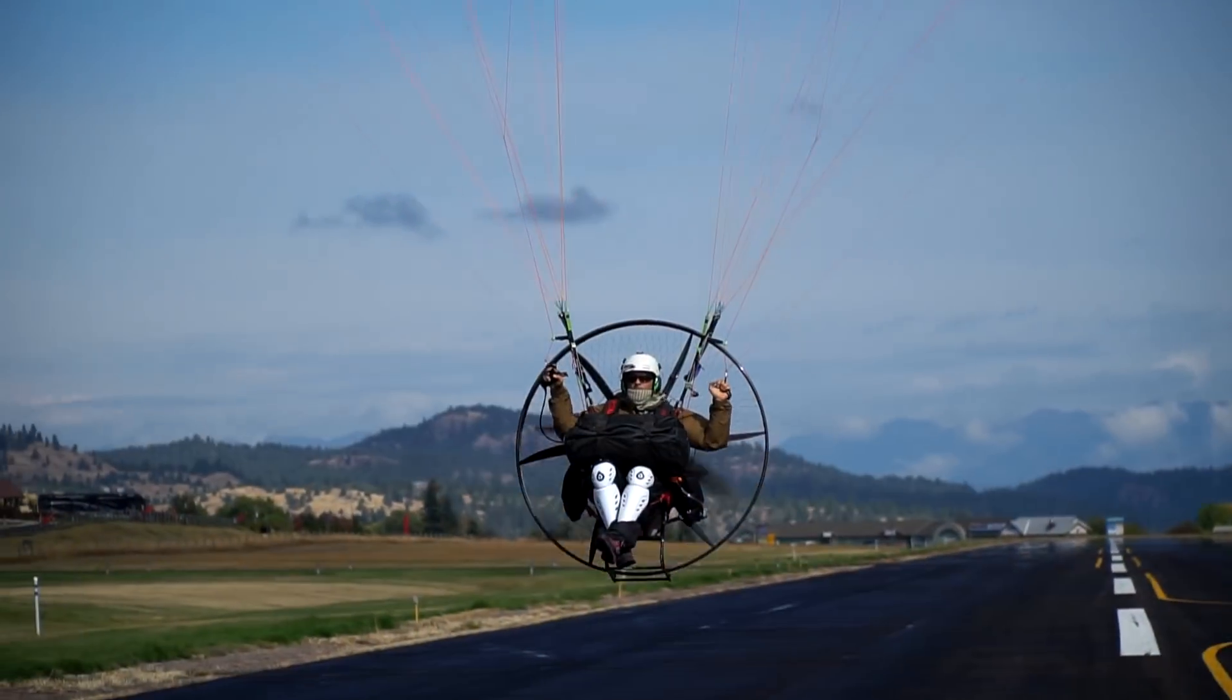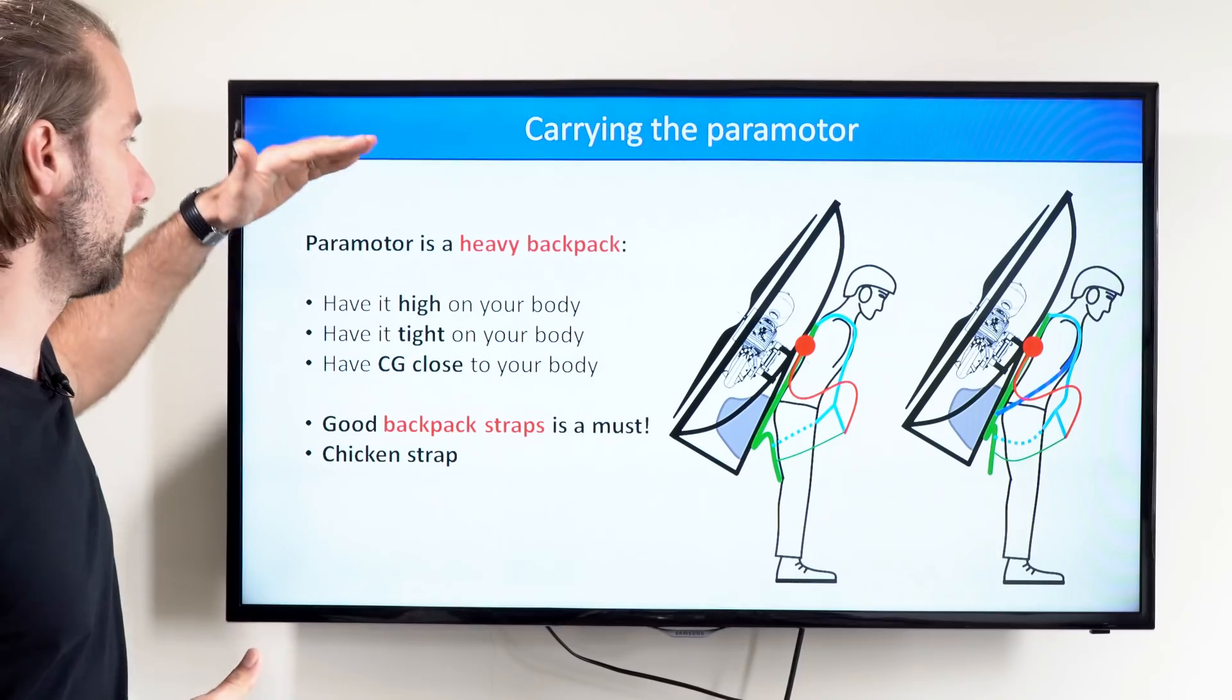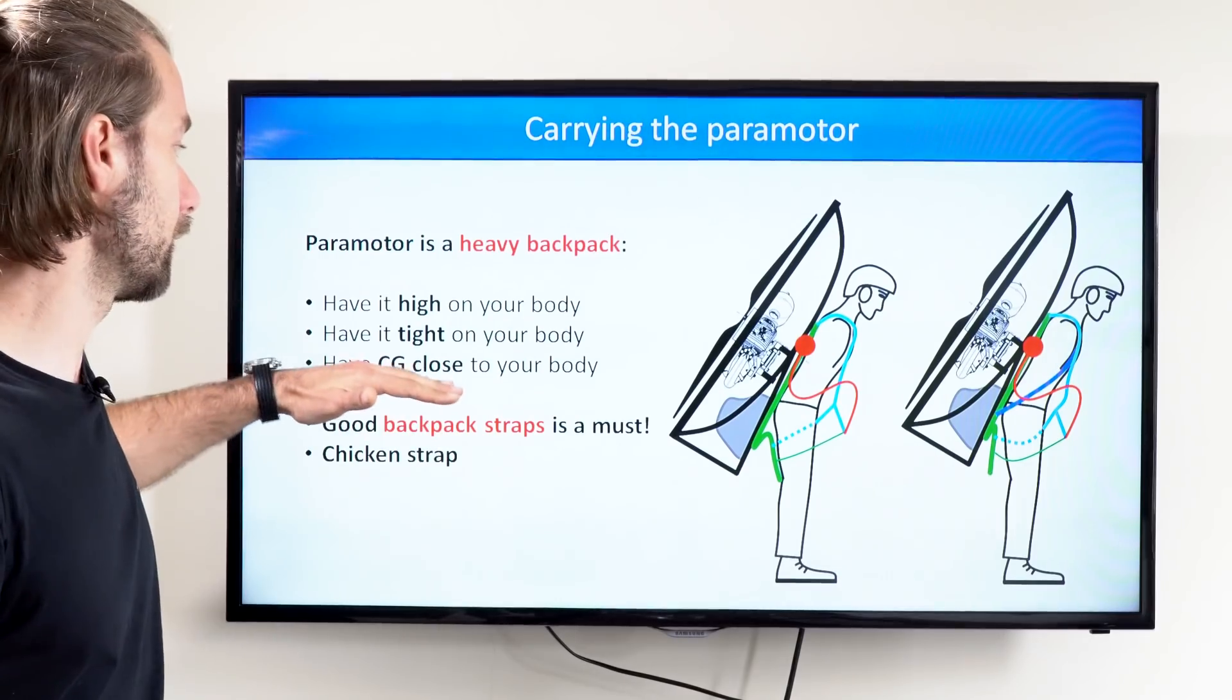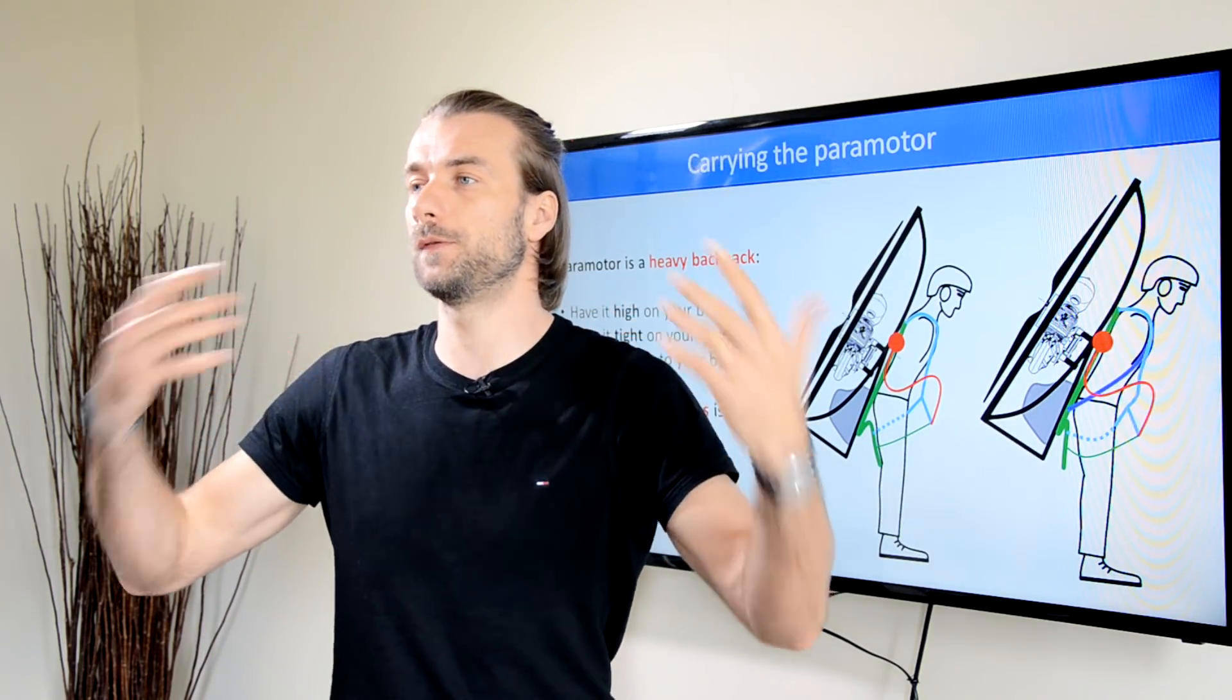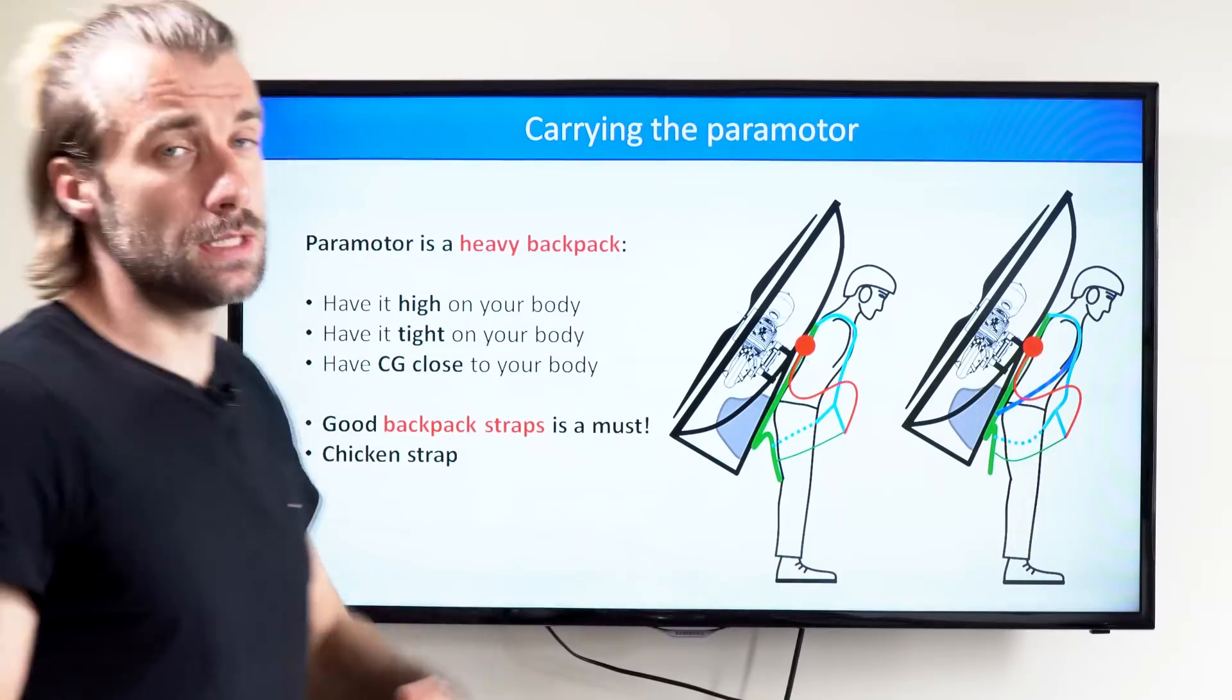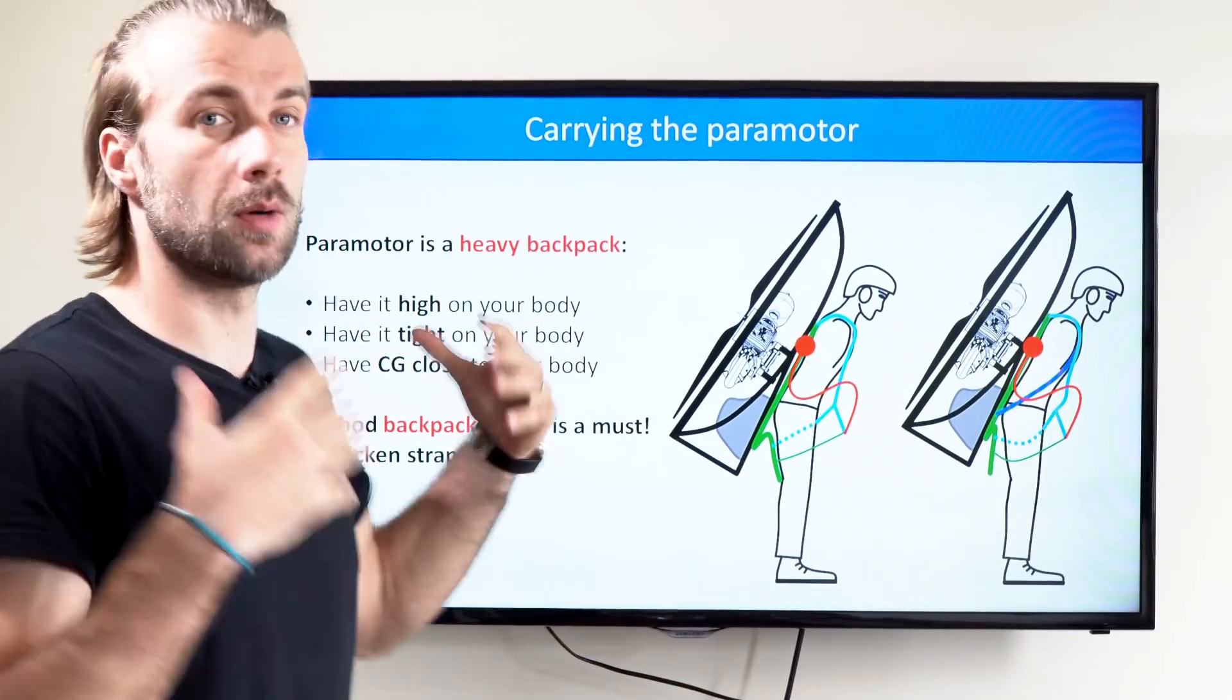So let's start with carrying the heavy backpack on our back. First, you want to have the paramotor high on your body. You want to have the paramotor tight on your body, and you want to have the center of gravity close to your body to make it even feel lighter. We've discussed this in chapter seven, so I don't want to repeat that.